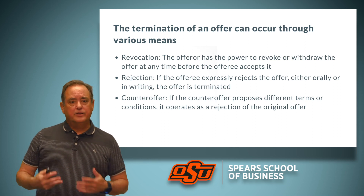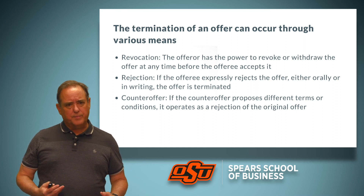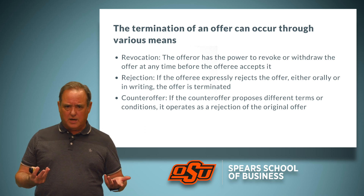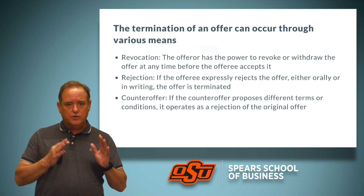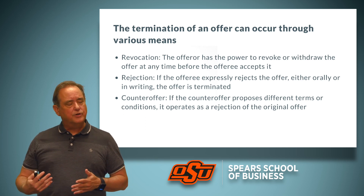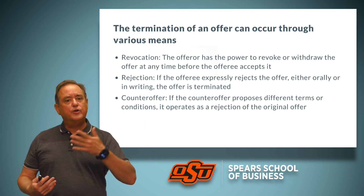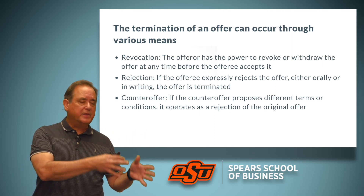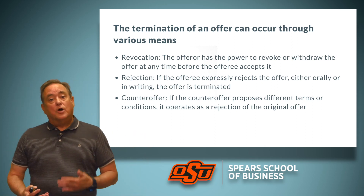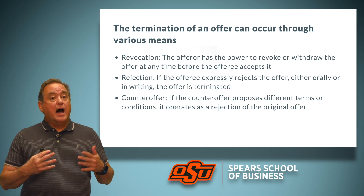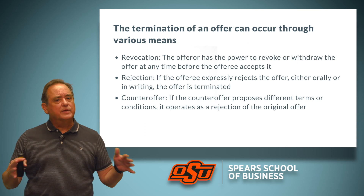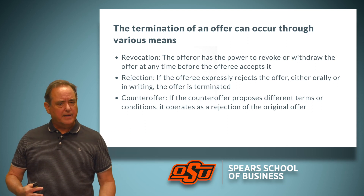If I say to you I will pay you $500 for your computer, and you say I will sell it to you for $600, you have rejected my offer and proposed a new offer. You have made a new offer — you have changed from the offeree to the offeror. In that case, I am not bound by my original offer, because my original offer terminated.